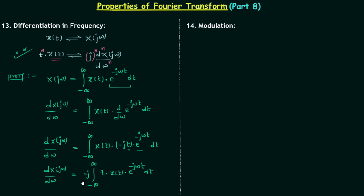We can write minus j as 1/j. Multiplying j on both sides, the j terms cancel, and finally we have j · d/dω X(jω) equal to the integral from minus infinity to infinity of t·x(t)·e^(−jωt) dt. This integral is the Fourier transform of the time domain signal t·x(t), thereby clearly proving the property.